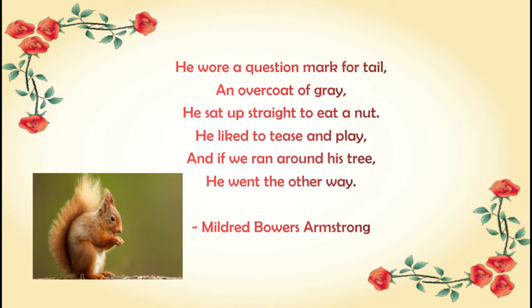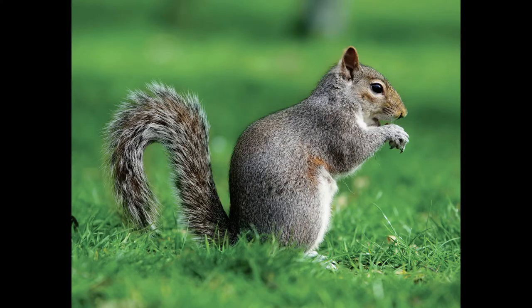Here the poet is saying that 'he wore a question mark for tail.' Now, who is 'he'? Here, 'he' is the squirrel. The poet is saying that the squirrel looks as if he is wearing a question mark because its tail is shaped like a question mark. And 'overcoat of grey' — the poet says overcoat because of the color of its fur, which is grayish in color. That is why the poet used the term 'overcoat of grey.'